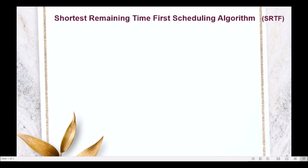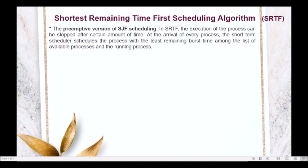Shortest Remaining Time First Scheduling Algorithm is the preemptive version of Shortest Job First, or SJF Scheduling. When we say preemptive, the technique here is the CPU is allocated to the process for a limited time, meaning execution of a process can be interrupted or stopped after a certain amount of time.